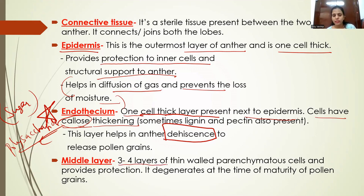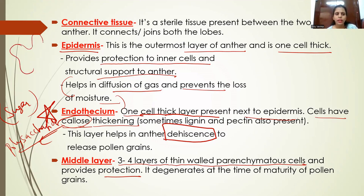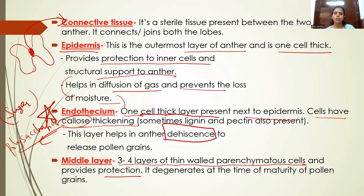Next to the endothecium there are three to four layers of thin-walled parenchymatous cells called the middle layer. These provide protection, and at maturity this middle layer degenerates. The connective tissue in dithecal anther joins the two lobes and is called sterile tissue — not because the cells are dead (they are living) but because they do not take part in reproduction or pollen grain formation. The only function of connective tissue is to attach the two lobes.